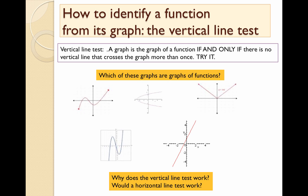A graph is the graph of a function if and only if there is no vertical line that crosses the graph more than once. So try it. Hold up a pencil vertically, straight up and down, and use it as kind of a scanner. Move it from left to right across one of the graphs.